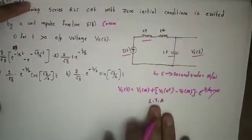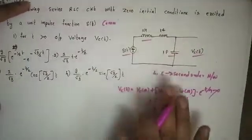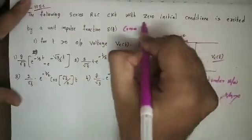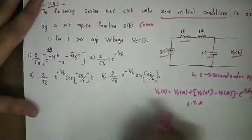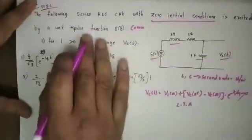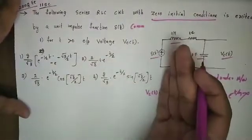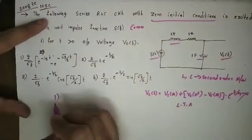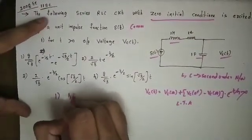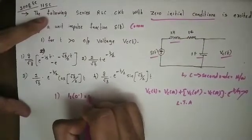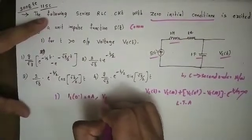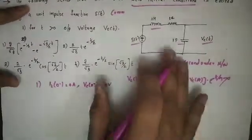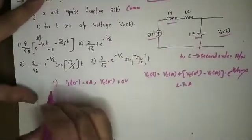We use the Laplace transform approach. First, the question states zero initial conditions. Zero initial conditions means the inductor current equals zero and capacitor voltage equals zero. So iL(0-) = 0 amperes and Vc(0-) = 0 volts. Now we can apply the Laplace transform.